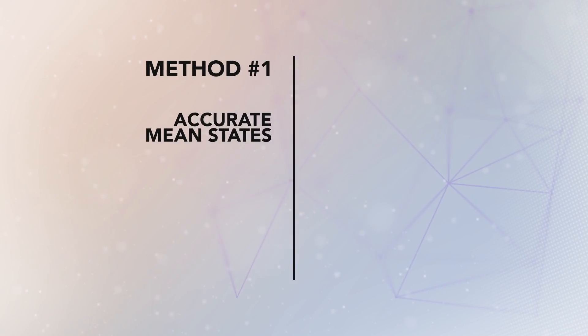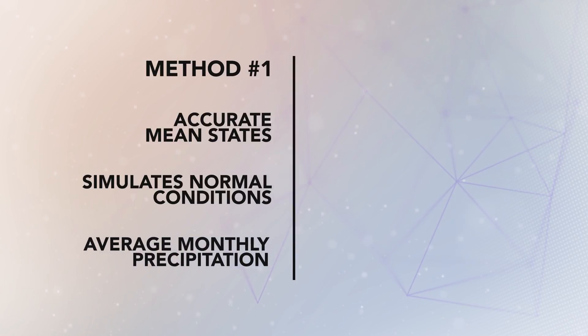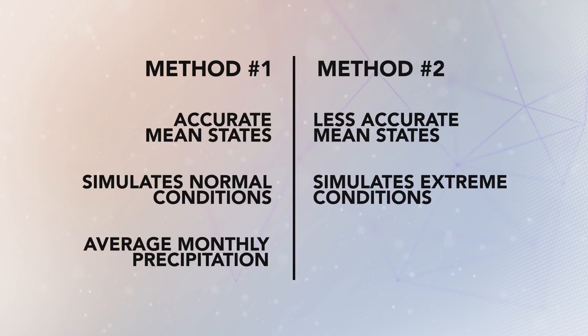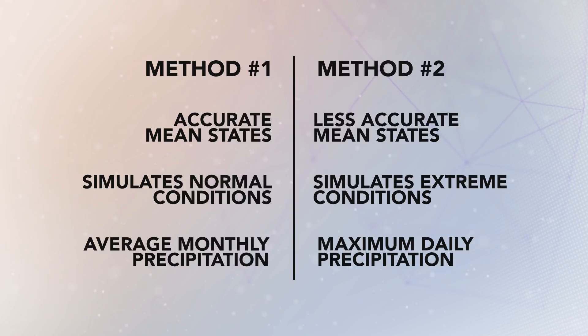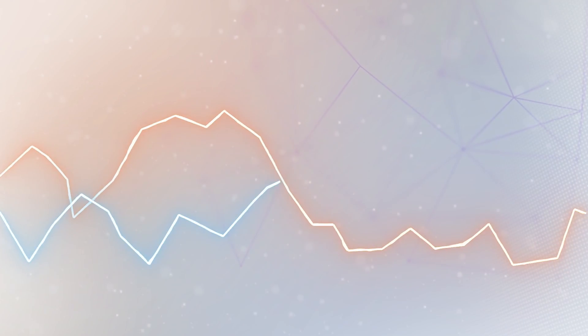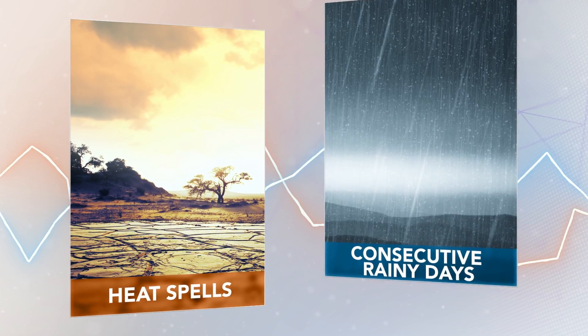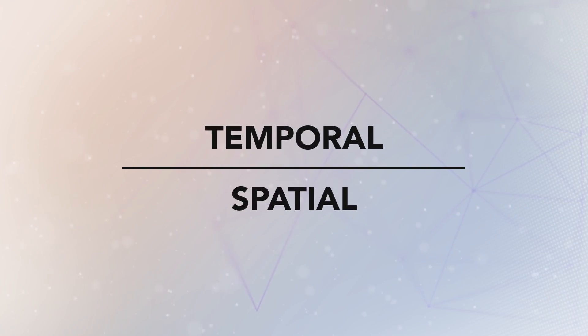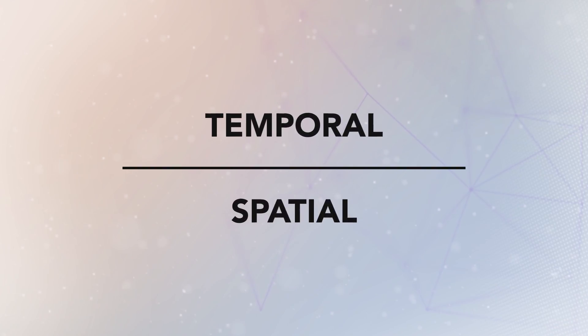It is also important to understand the method used to produce the downscaled projections. If you use statistically downscaled projections, as many decision makers do, you need to know that not all the methods are created equal. Some methods are designed to produce more accurate mean states of climate variables, such as average monthly precipitation amount. Other methods are designed to compromise the mean state performance in order to improve their behavior simulating extreme events, such as maximum daily precipitation amount. Similarly, some statistical downscaling methods are designed to improve the representation of a sequence of events, like heat spells or consecutive number of wet days. And some methods focus on improving temporal correlations, while others are more appropriate to analyze spatial behavior.